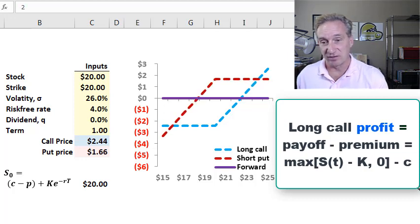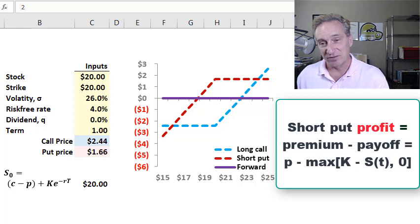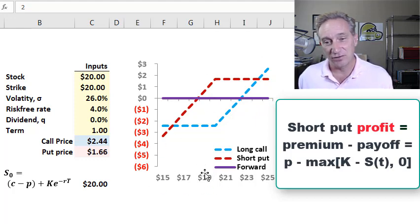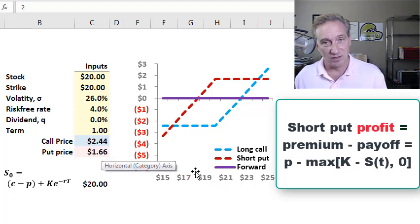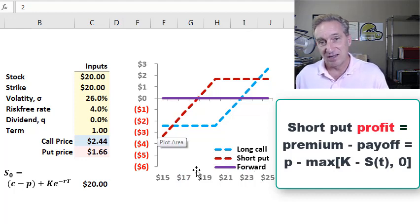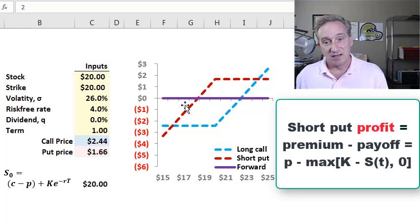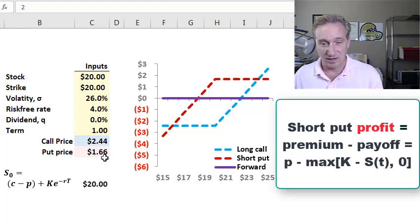Then I'll add a short put position. This is writing or selling the put. At higher future stock prices, it shows a flat net profit equal to the premium collected. We collect $1.66 today, and at future stock prices above the strike price, it expires worthlessly and we just pocket the premium. On the other hand, if the future stock price is below the strike price, we start to incur a net loss. The break even is at the $20 strike minus the put premium of $1.66, about $18.34.